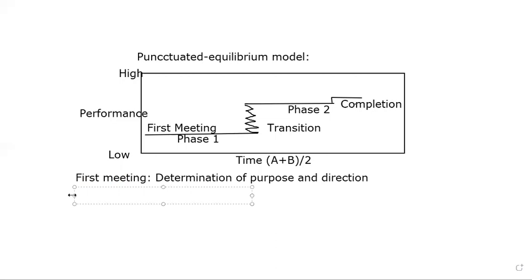The second phase of group development is transition. In this stage, it starts halfway between the first meeting and official deadline, that means between first meeting and completion. This is characterized by burst of changes, dropping of old patterns, and adoption of new perspectives.